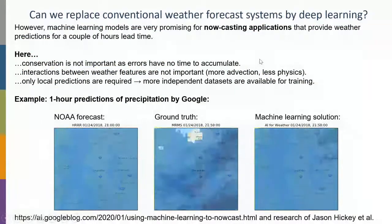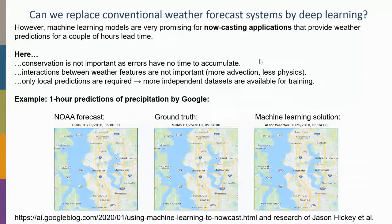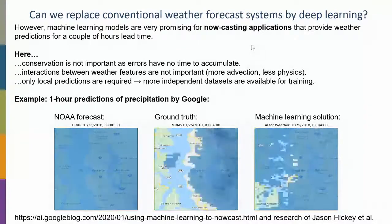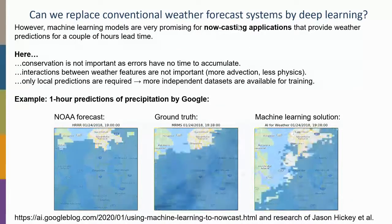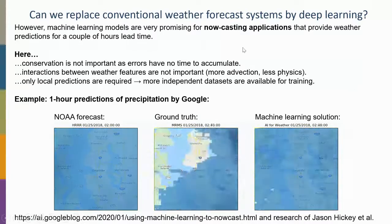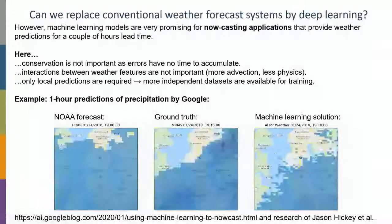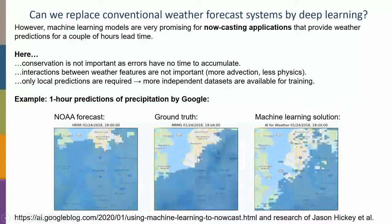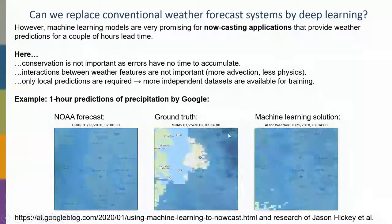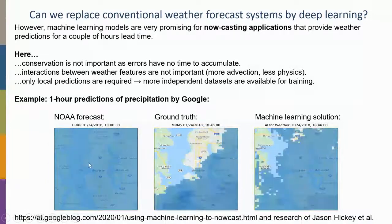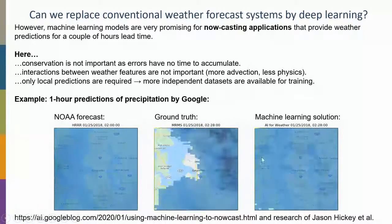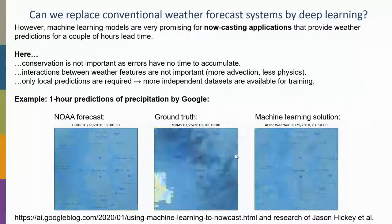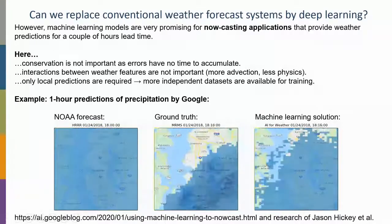It depends what you want to predict. For 10-day forecasts, conservation properties matter greatly. For nowcasting — one to three hours ahead — conservation is less critical. There are very promising examples, such as from Google, using machine learning for nowcasting applications: precipitation prediction over Seattle, where the machine learning solution is much more similar to observations than the current NOAA forecast. Nowcasting is much more likely to be competitive.